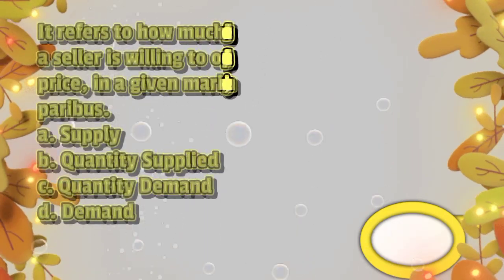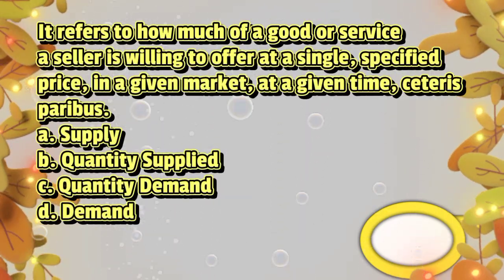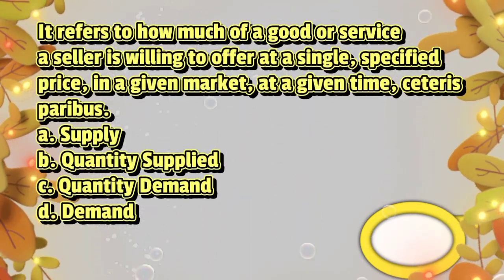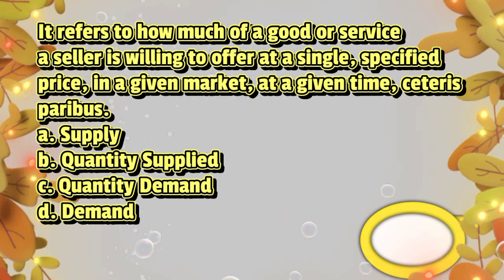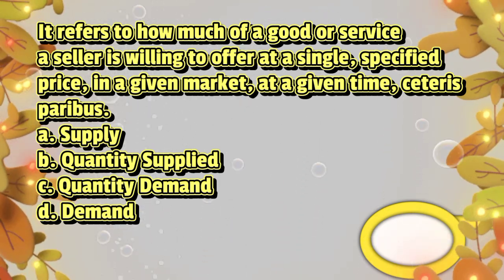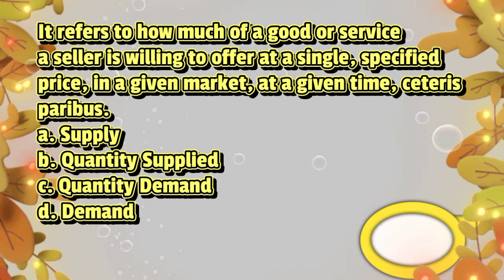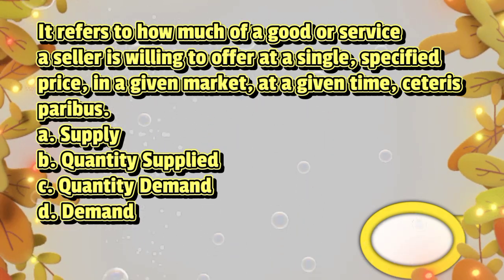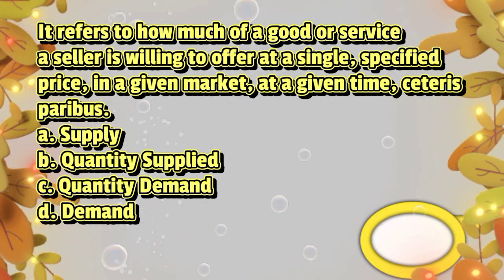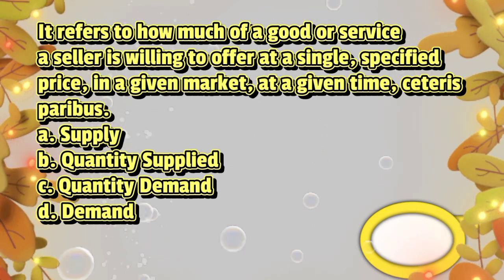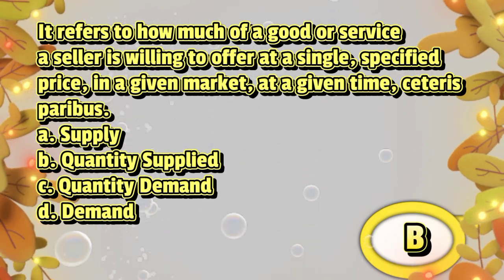It refers to how much of a good or service a seller is willing to offer at a single specified price, in a given market, at a given time, ceteris paribus: A. supply, B. quantity supplied, C. quantity demanded, D. demand. The answer is letter B.